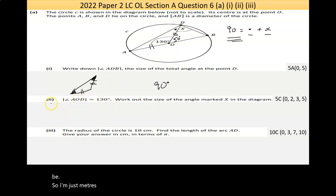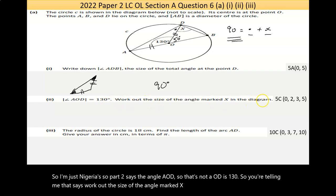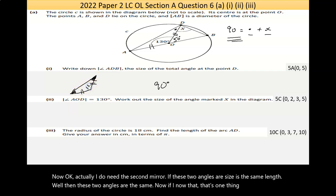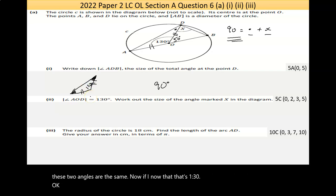Part two says the angle AOD is 130. Work out the size of the angle marked x in the diagram. I do need this triangle here - if these two sides are the same length, then these two angles are the same.